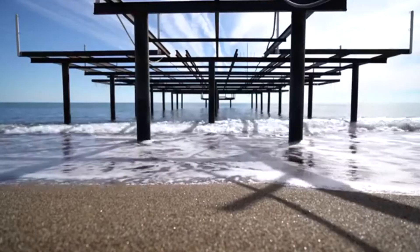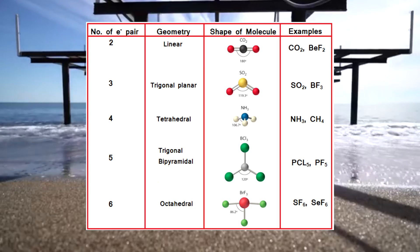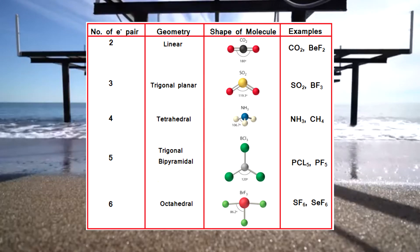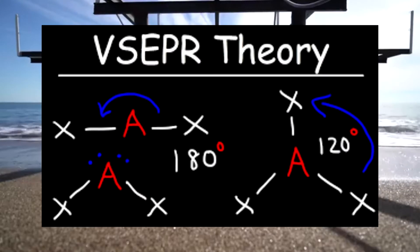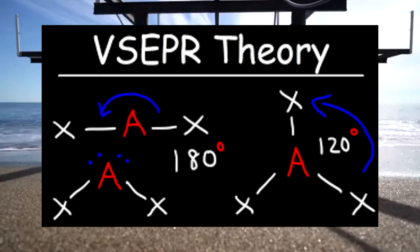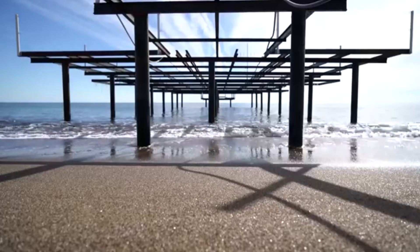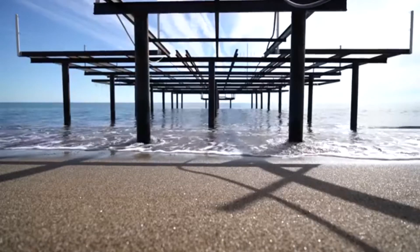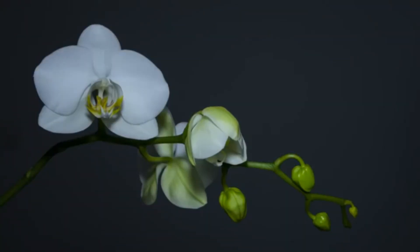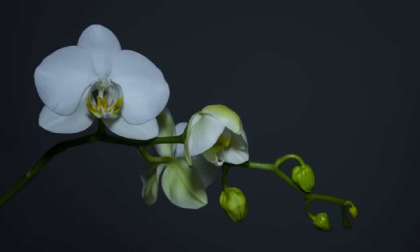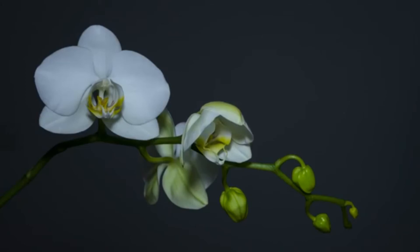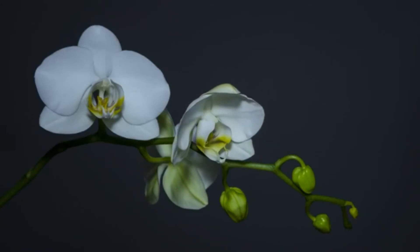A molecule's molecular geometry is the three-dimensional arrangement of a molecule's atoms in space. These geometries can be explained through VSEPR theory, which stands for valence shell electron pair repulsion. The theory states that repulsion between the sets of valence electrons surrounding an atom causes these sets to be oriented as far apart as possible. Essentially, a bond's molecular shape can be determined based on the number of lone pairs and atoms bonded to the central atom.